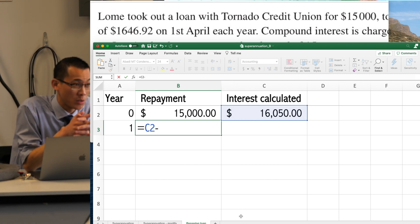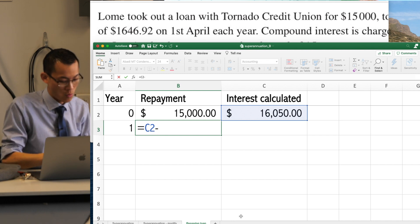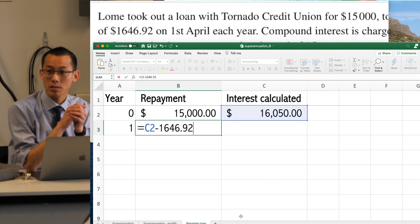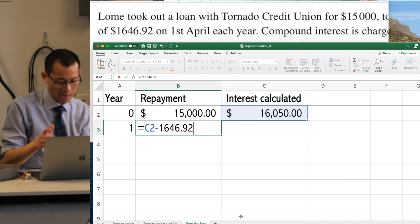Okay. What's the thing I'm subtracting again? What quantity? Look at the quantity, it's 1, 6, 4, 6, and 92 cents. That's my repayment. Does that make sense? Okay, so I hit enter.